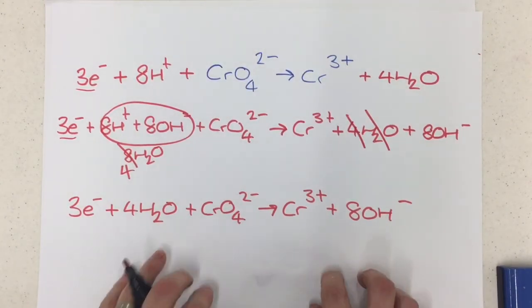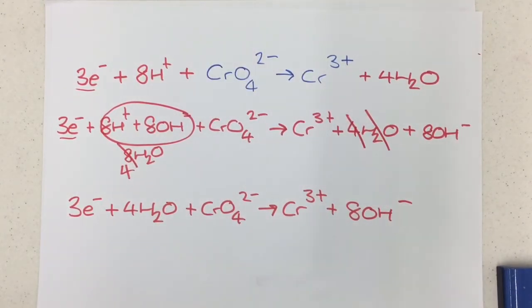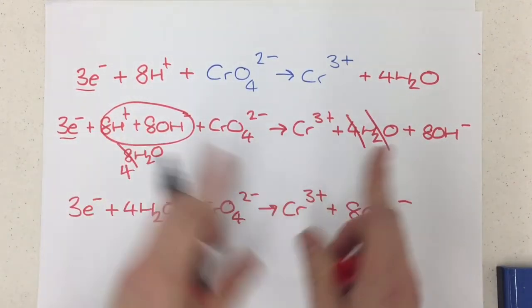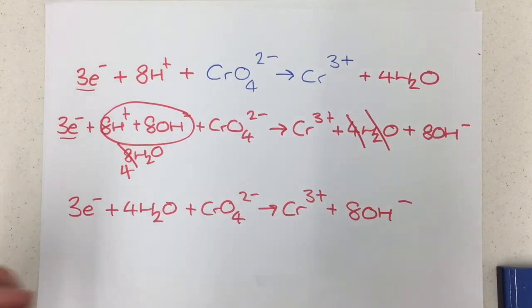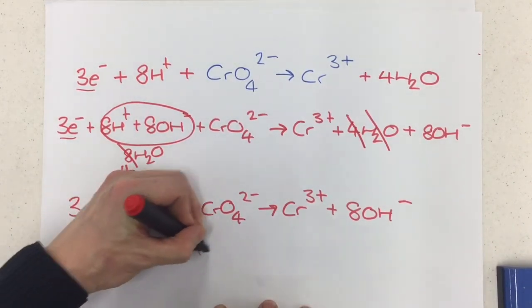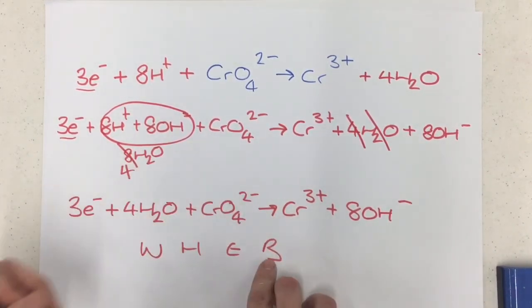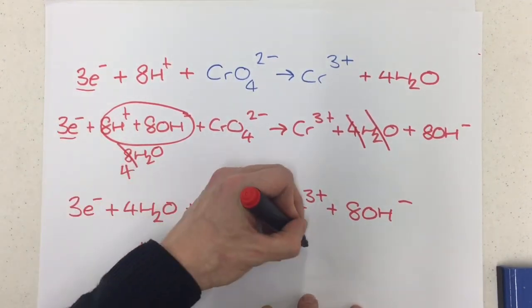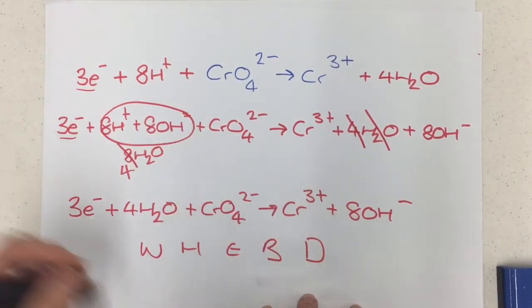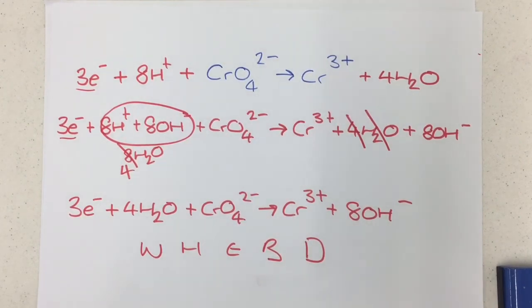So hopefully that gives you a really good, solid method you can jump into the exam with. You don't have to tennis back and forth trying to balance things out. You've got a clear method. You're either following WEB, with the B being balanced in if you've got time, and if it's alkali conditions, it's WEBD, because you're going to drown both sides in OH-. I'll leave you to the rest of the videos in the Redox or Transition Elements playlist, and until then, happy revising.